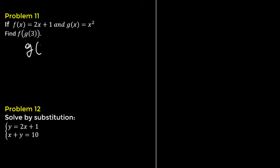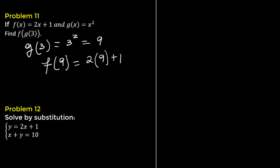First, g of 3 equals 3 squared, which is 9. Then f of 9 is 2 times 9 plus 1, which equals 19. So f of g of 3 is 19.